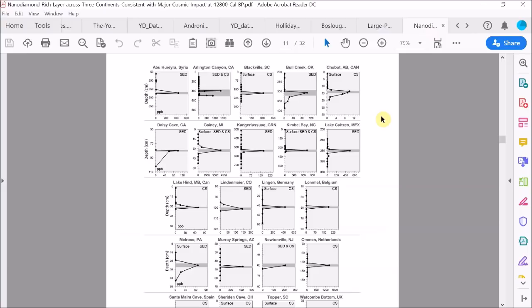And now we have around 15 sites across three continents where evidence for a cosmic impact, such as nano diamonds and impact spherules, is found and dated closely to the same time.